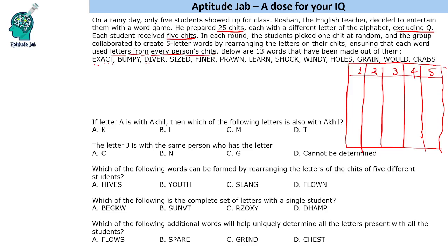If you look at the word DIVER and the word FINER, they have 3 letters common: I, E and R. So let us say the word DIVER is made like D-I-V-E-R. That does not mean this is the first person — this can be any person. If you look at FINER, I, E, R are common, so this means F and N are part of position 1 or 3.